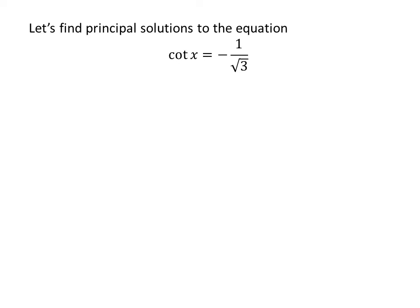Let us first find the principal solutions to the equation cotangent of x is equal to minus 1 upon square root of 3. We know the solutions to the trigonometric equation for which x is greater than or equal to 0 and less than 2 times pi are the principal solutions.